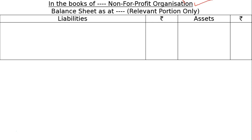NPO – Not-For-Profit Organization – there is no date given to us. We will write the date and relevant entries only, as this is not a complete balance sheet. This is our sample format of the balance sheet – liability side. All funds are liabilities, and we can treat items through the income and expenditure account.